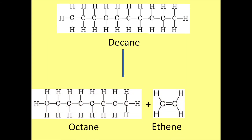Here is an example of cracking decane. Decane is an alkane which has 10 carbons and therefore 22 hydrogens. When we break the decane, we could break any one of those carbon-carbon bonds. In this example, we're breaking it down into octane and ethene. Ethene looks a lot like ethane in that it has two carbons, however it doesn't have as many hydrogens as an alkane would have, and that's because this is an alkene — notice the 'ene' on the end instead of 'ane'. That 'ene' is due to there being a double bond between the two carbons — a double covalent bond where four electrons are shared between the two atoms, instead of the two electrons found in a single covalent bond.